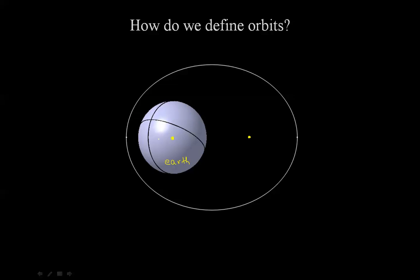A commonly asked question to confuse students in exams is: what is at the other focal point? The answer in most cases is nothing. There doesn't have to be anything at the other focal point.